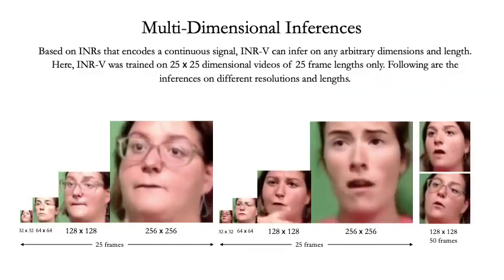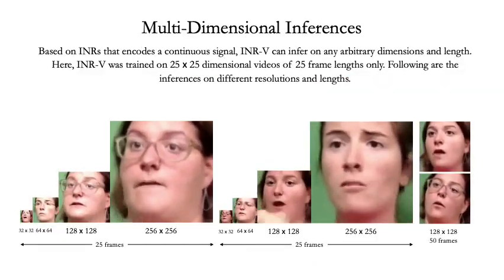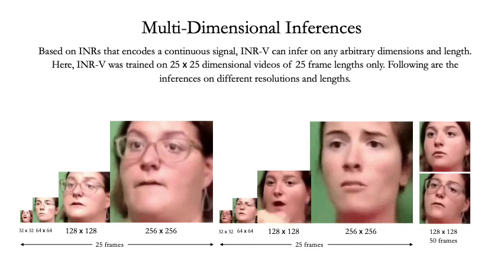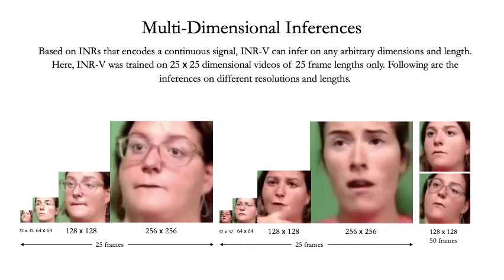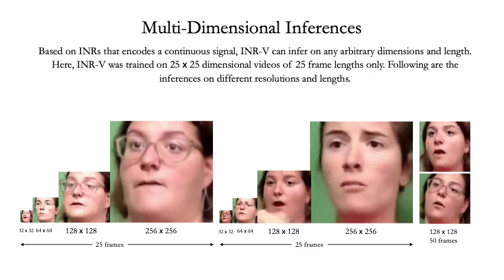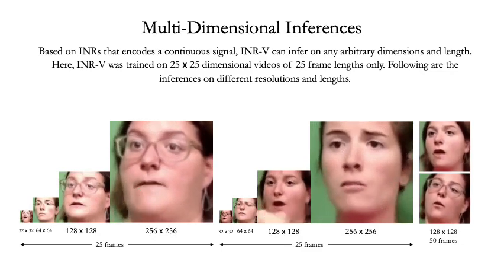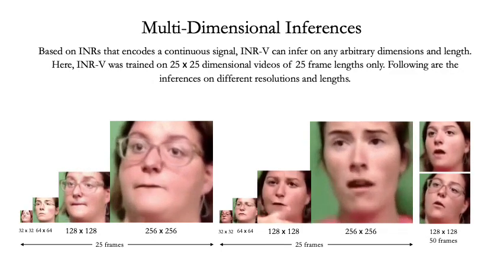Here we show INRV's inference on multiple resolutions and lengths. Based on INRs, INRV is not constrained on any dimension. INRV is trained on only videos of 25 frames at 100x100 resolution. We infer INRV at 32x32 resolution up to 256x256 resolution, making a jump of 8x scale factor. We also infer INRV on 50 frames. The results are smooth and coherent videos.